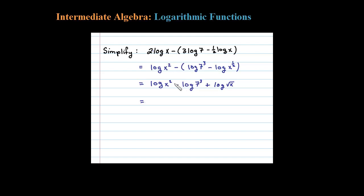Okay now let's apply the property of the log that says when you subtract you can divide those arguments. So we have log of x squared divided by 7 to the third plus log of the square root of x.